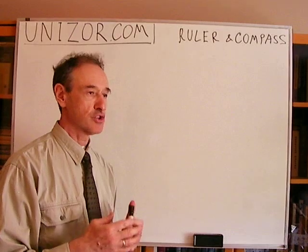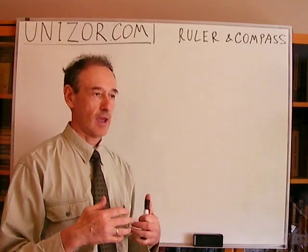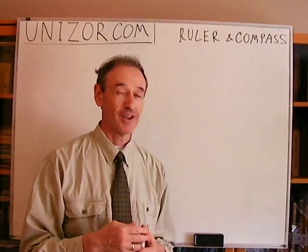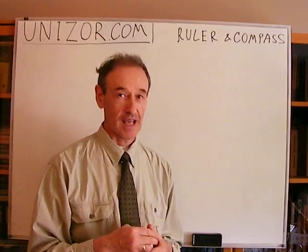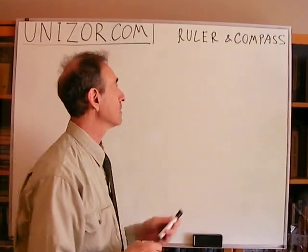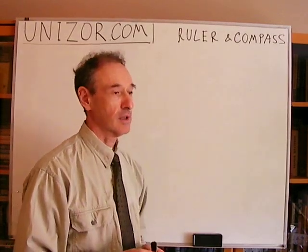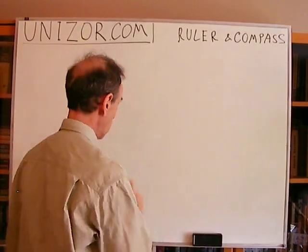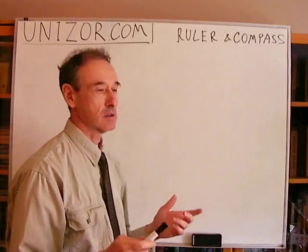So, what are the tools with which we can imaginarily build all these elements? Well, there are two main tools. One is called the ruler and another is called the compass. So, what can we do with these tools?